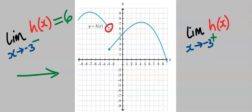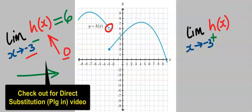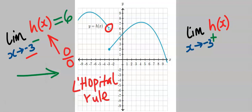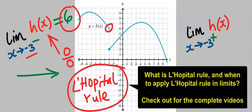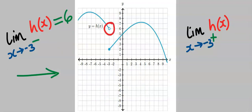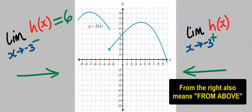This hole symbolizes that when we input x = minus 3, direct substitution gives us 0 over 0, but after applying L'Hôpital's rule we obtain 6 — that's why there is a hole. Next, let's approach this graph from the right.